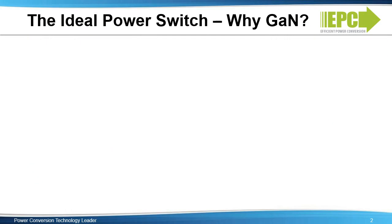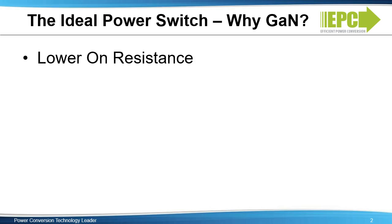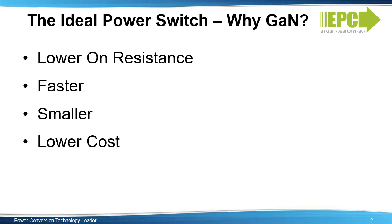Let's look at what would make an ideal power switch. These are the key requests from engineers in power conversion: low conduction losses, which require devices to have a very low on resistance; faster devices have less switching losses when used in hard switching applications like buck converters; smaller means less space on a PC board, and board space is very expensive real estate. And of course, everyone wants lower cost.